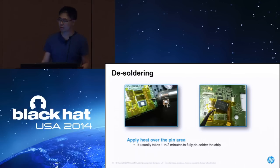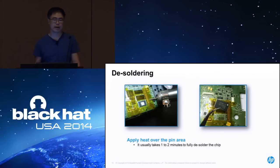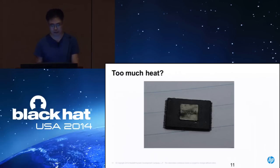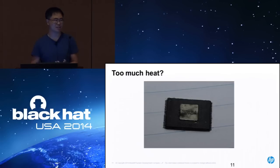The desoldering procedure looks like this: you just apply the hot air around the pins and take it out — really simple and straightforward. But if you apply too much heat, you can damage the chip physically and it can burn out. If you try to read the chip after that, you can't read anything because it's damaged — it will just return 0, 0, 0, 0.